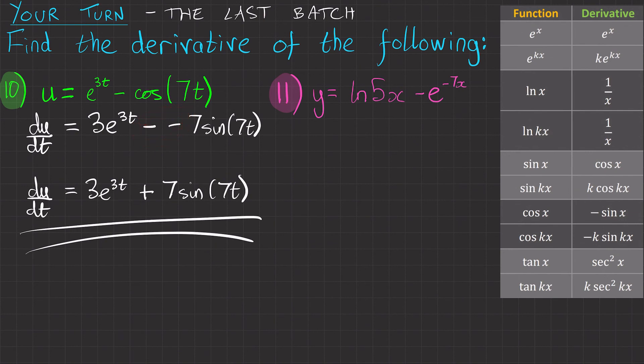And our final question of the video. Question 11. We've got y equals ln 5x minus e to the minus 7x. So I'll start off by writing dy/dx equals the first term ln 5x. We've got ln kx here, which becomes 1 over x. Minus.